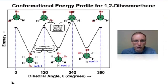Let's construct a torsional potential energy diagram for dibromoethane. Our three minima are represented here. The two gauche conformations have identical energies, and the energy of the anti-conformation is below that of the gauche conformation.